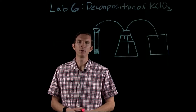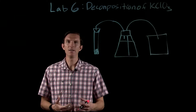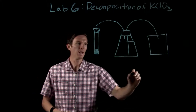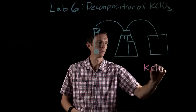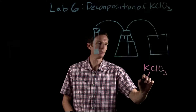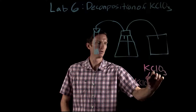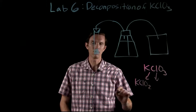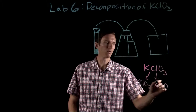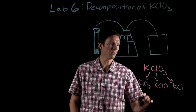In this upcoming lab, we're going to look at the decomposition of potassium chlorate. If we have potassium chlorate, we're going to see that it can decompose into three possible products: potassium chlorite, potassium hypochlorite, and potassium chloride.